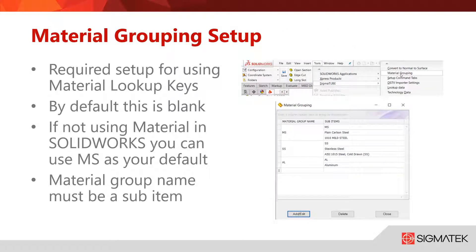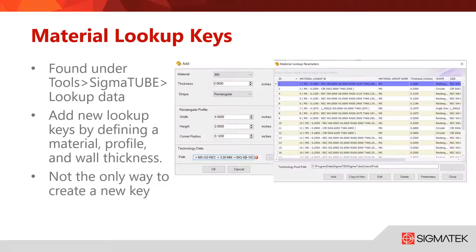To set up the material grouping page you can go to tools, Sigma Tube, material grouping. From there you will need to add your material group and in the sub items make sure your material group name is there. Add the other material names to your sub items that you would use in SolidWorks. If your machine doesn't use Sigma Tube to give it the tech table information then you can simply use MS for mild steel as we will default to that material every time. Once you have your configuration box checked for material lookup and your material grouping is set you can start building your lookup key database.